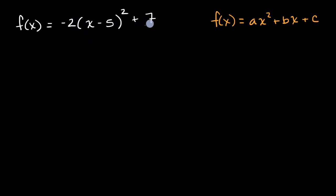Well, we essentially will expand things out. So we could start with x minus five squared. So we're gonna multiply x minus five times x minus five. Then we're gonna take that, multiply it by negative two, and then add seven.